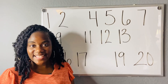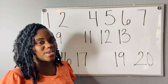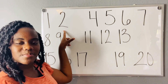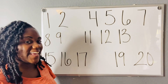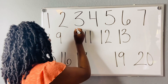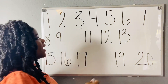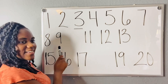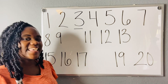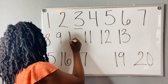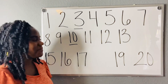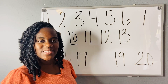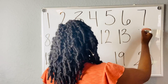Did you get it? Come on, let's see what numbers we are missing on our number chart. 1, 2 — what number comes after 2? 3. So the number 3. Let's keep going. 4, 5, 6, 7, 8, 9. What number comes after 9? 10. Good. Let's keep counting. 11, 12, 13. What number comes after 13? 14.